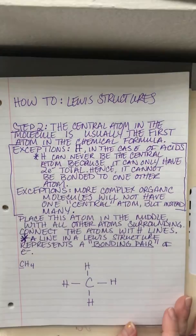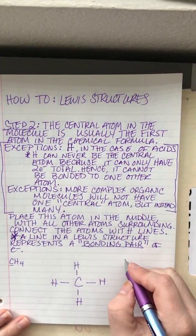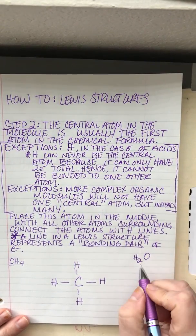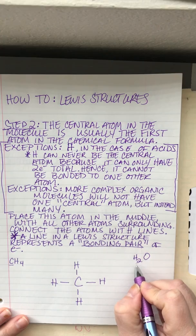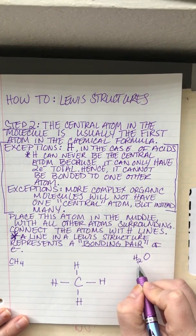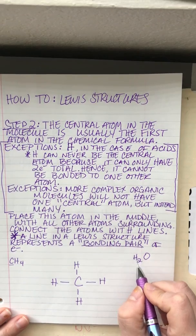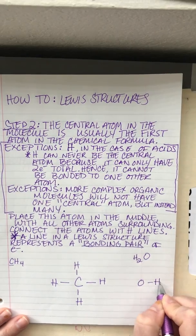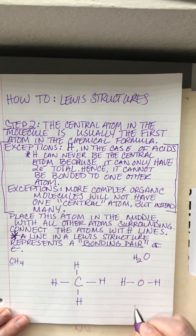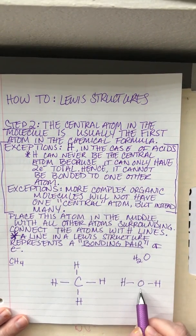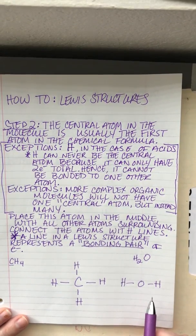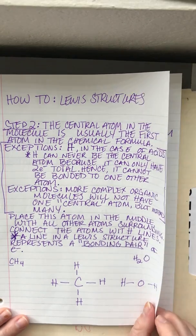Moving on to step two with H₂O — remember, when there's hydrogen out front, it can't be the central atom because it can only be bonded to one atom, which means that oxygen must be our central atom. So we put oxygen in the center and put the two hydrogens on either side, connecting them using lines.